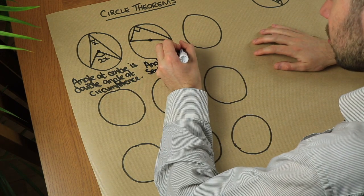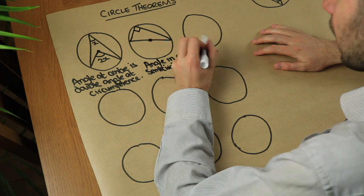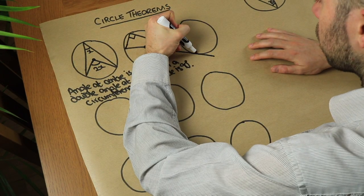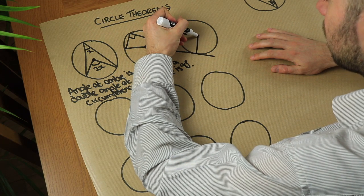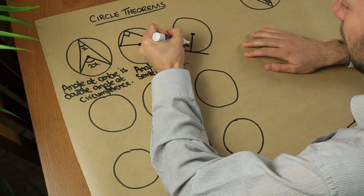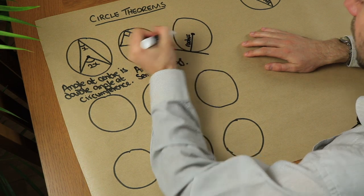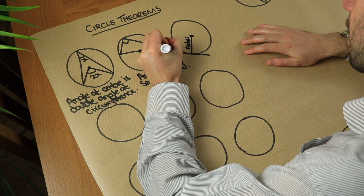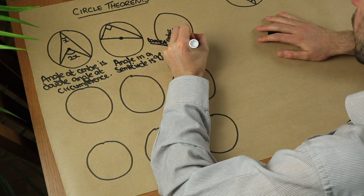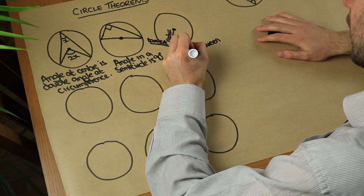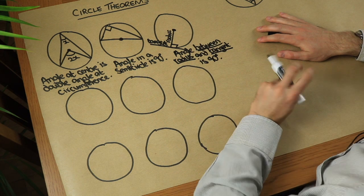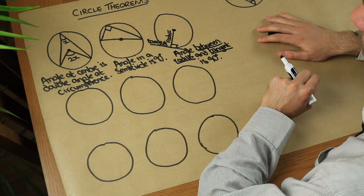Next: if we have a tangent to the circle — a line that touches the circle is known as a tangent — and we have a radius attached to that tangent joining the centre of the circle, then the angle between the radius and the tangent is 90 degrees. Make sure that when required to give a reason, you quote that word for word.